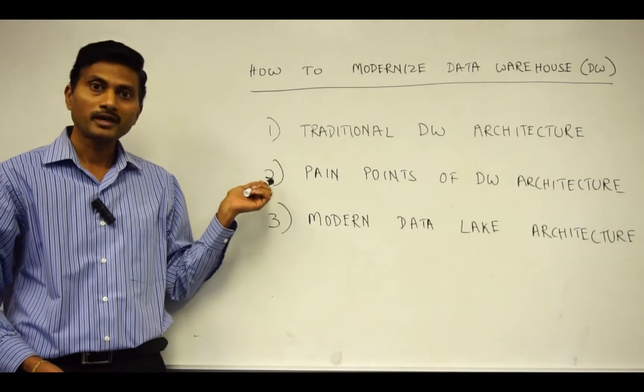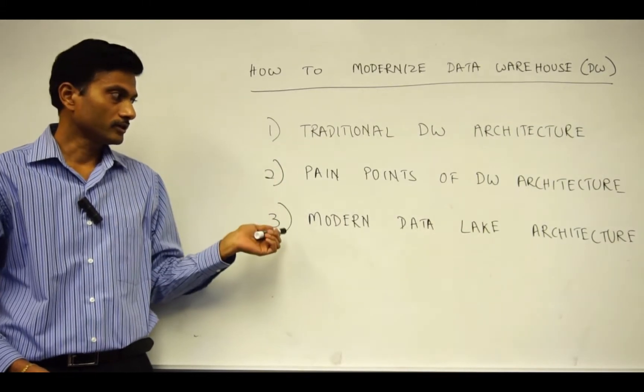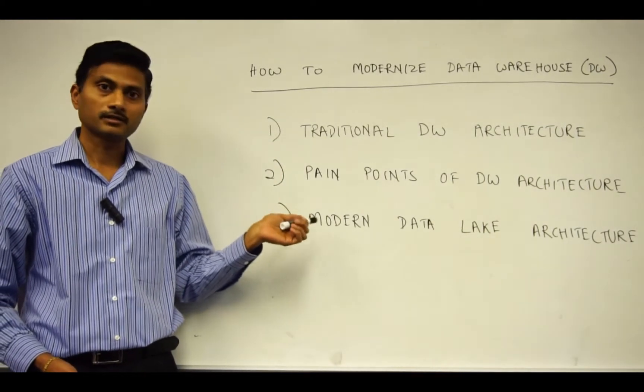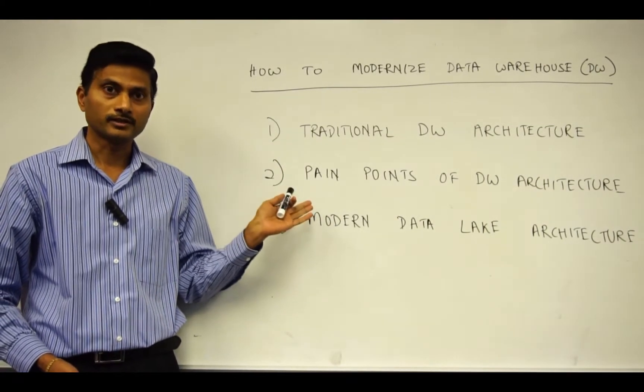Two, what are the pain points of this architecture? And three, how to build a modern data lake architecture to alleviate those pain points.